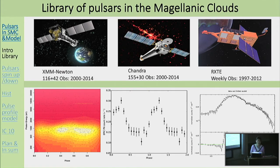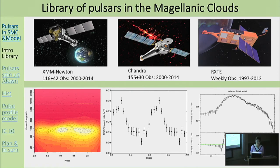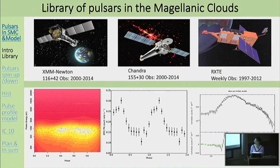We have created a library of pulsars in the Magellanic Clouds, collecting and analyzing over 1,000 XMM-Newton, Chandra, and RXTE observations, covering 15 years of detection. XMM-Newton and Chandra detections are from 2000 to 2014, and all RXTE weekly observations are from 1997 to 2012. For each pulsar detection, our pipeline generates a suite of useful products: single-source event lists, periodograms, light curves, and spectra.